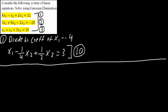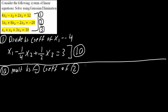Now I will multiply equation 1a by the negative coefficient of x1 in equation 2, and then add it to equation 2. The coefficient of x1 in equation 2 is 3, so I will multiply 1a by negative 3 and add it to equation 2. This eliminates the 3x1 term, leaving us with two unknowns: x2 and x3.